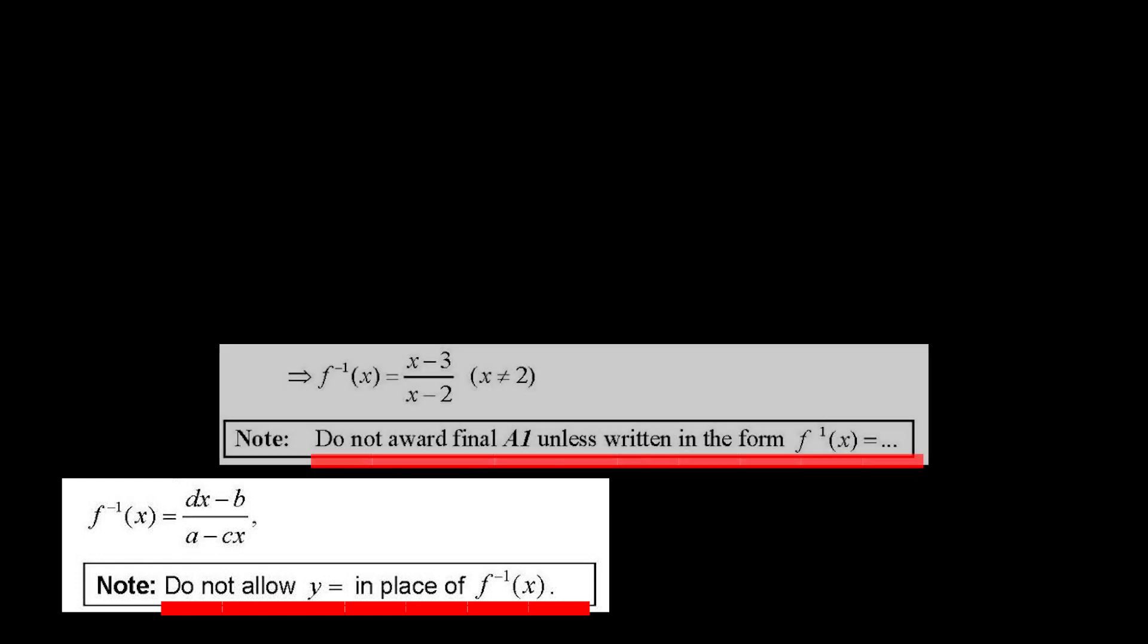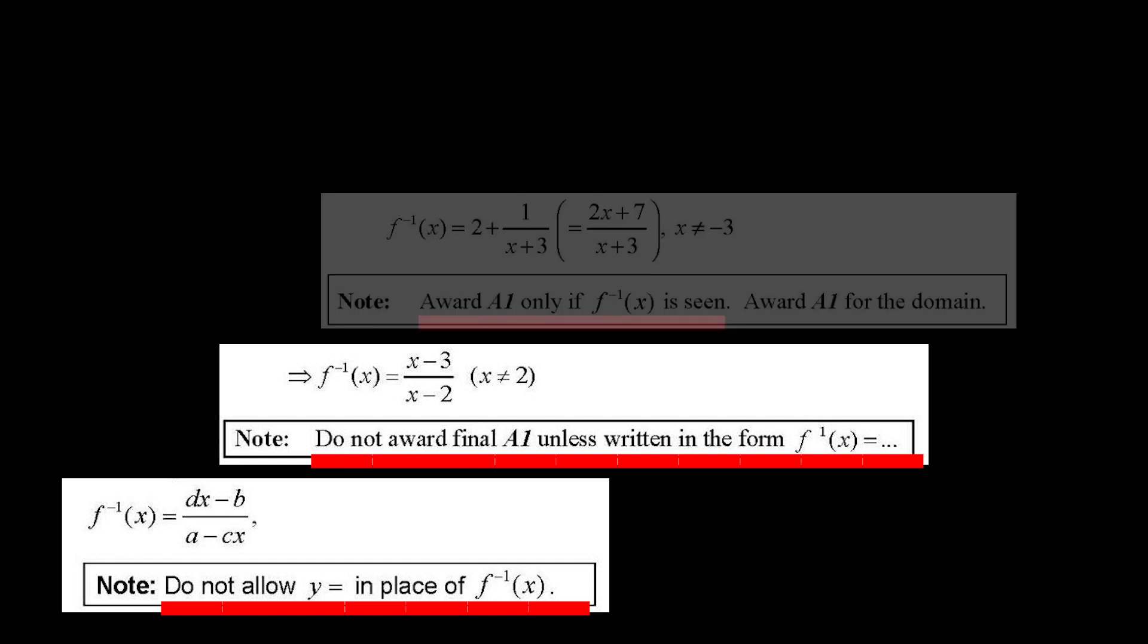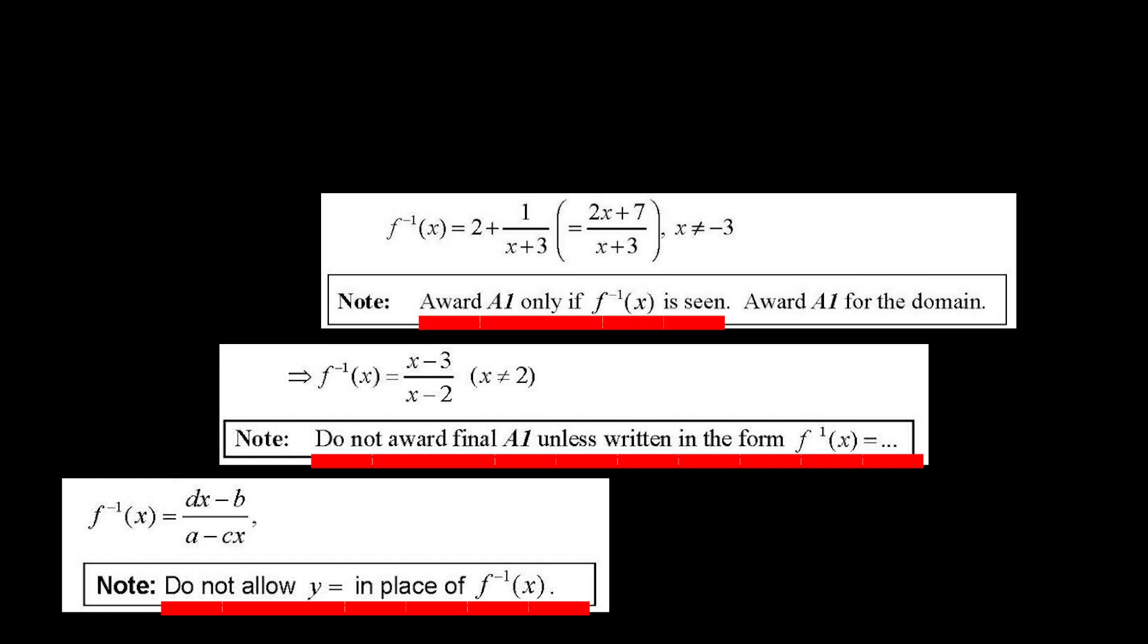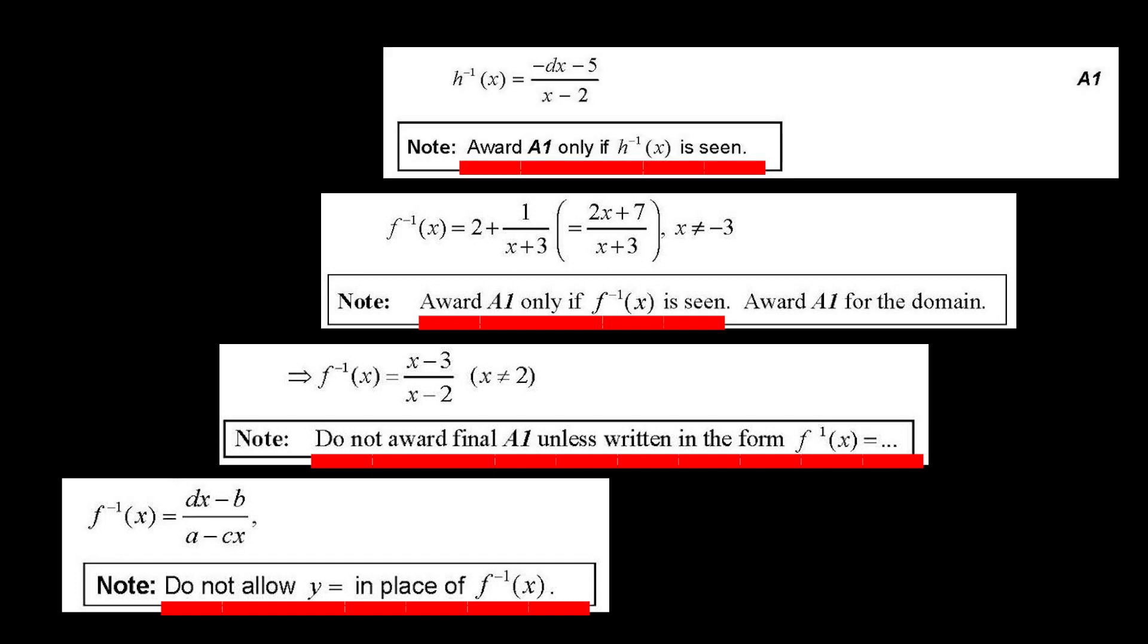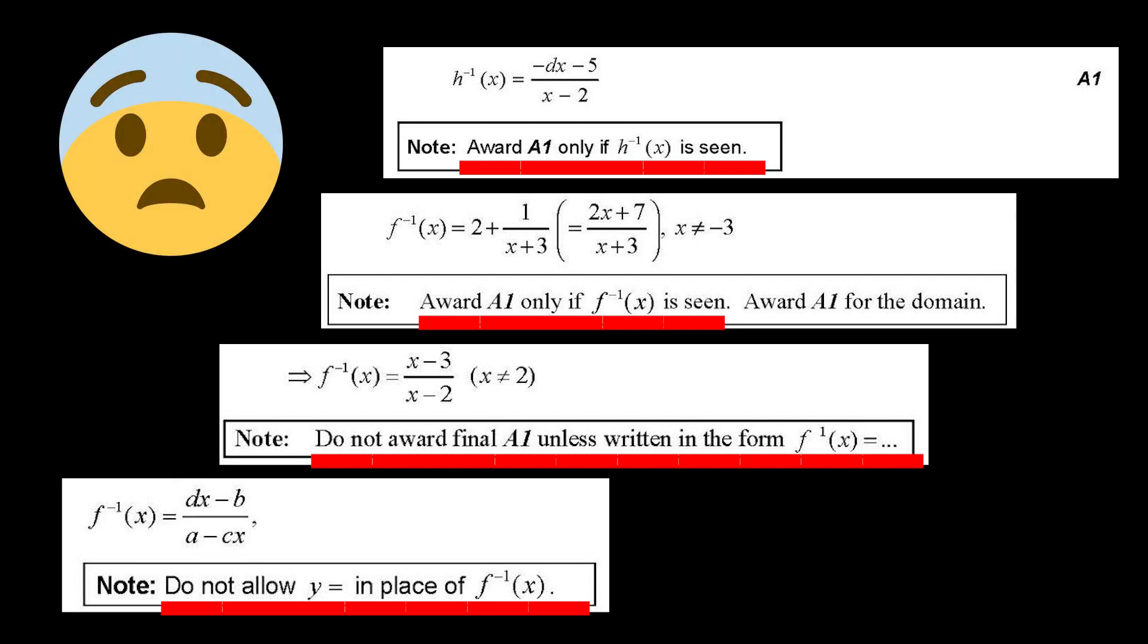Number four, inverse functions. When finding the inverse function, it is important to use the correct notation to avoid losing marks. If the given function is called f of x, then its inverse function must be denoted as inverse of f of x. Similarly, if the given function is g of x, then its inverse function must be denoted as inverse of g of x. Using any other notation or simply y as the name of the inverse function can result in deduction of marks.